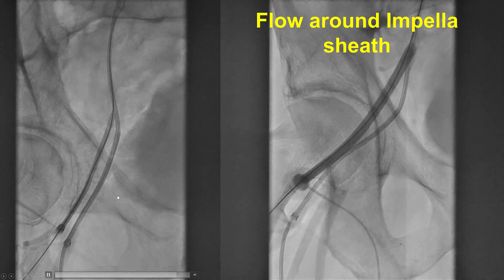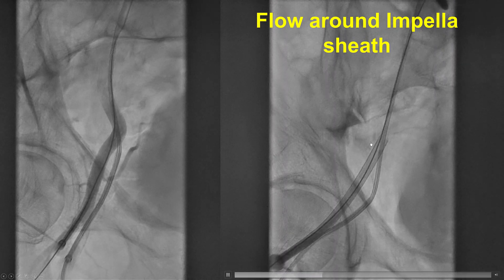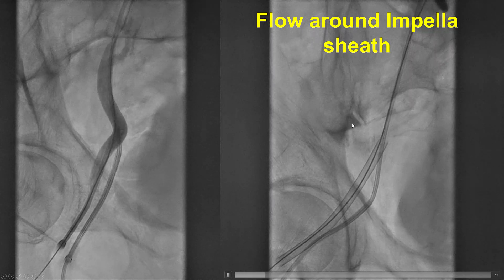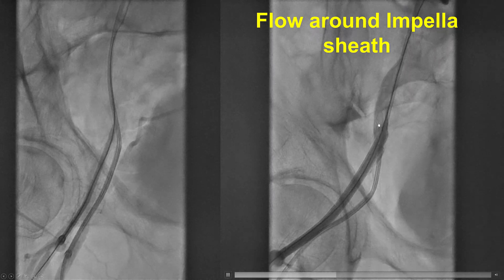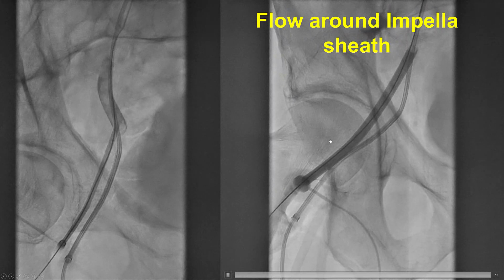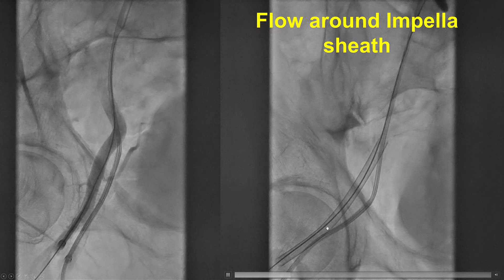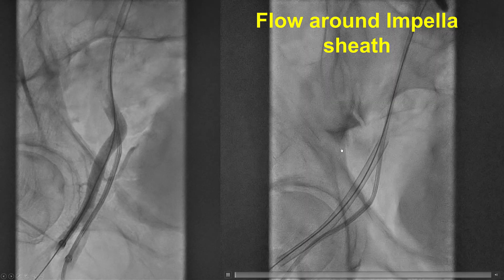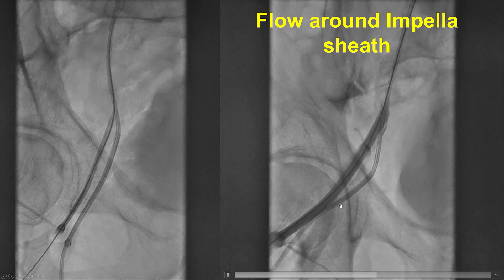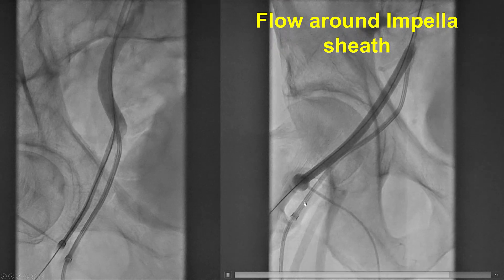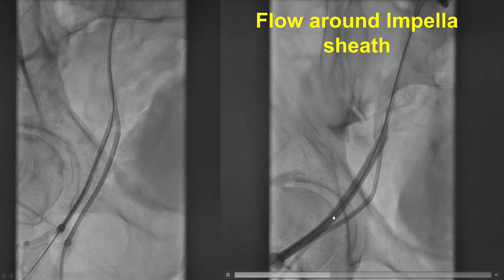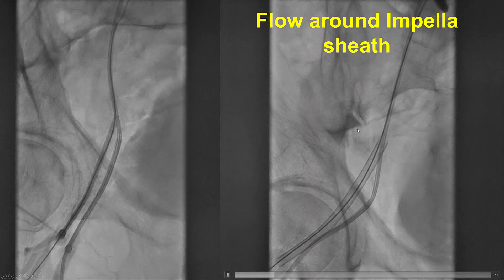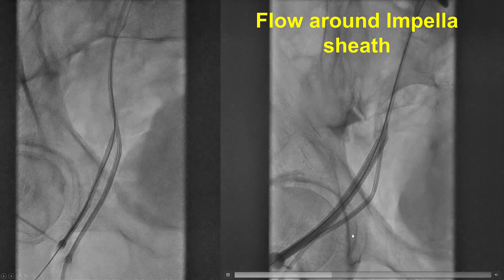The femoral access was established and the Impella sheath was placed. We typically inject contrast after placing the Impella sheath to ensure antegrade flow into the lower extremity. If there is not adequate flow, we still most of the time proceed with the procedure, but we know that within a few hours the patient will likely develop limb ischemia — an important factor in planning hemodynamic support.